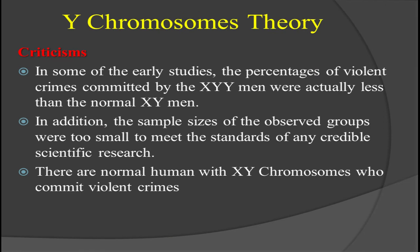Now let's look at some criticism of the Y chromosome theory. In some of the early studies, the percentages of violent crimes committed by XYY men were actually less than those committed by normal XY men. A lot of other experiments were conducted to justify or falsify the theory, and data showed that violent criminals — even within prison populations — were normal XY chromosome males who were even more violent than those having an additional Y chromosome. Furthermore, the sample sizes of the observed groups were too small to meet the standards of any credible scientific research.